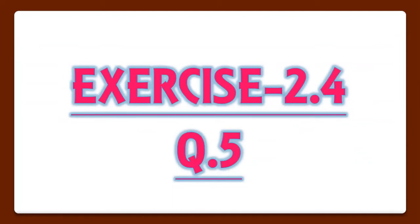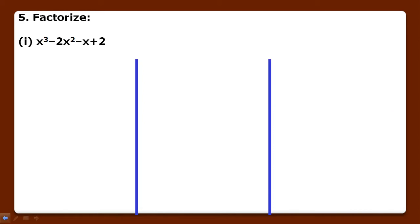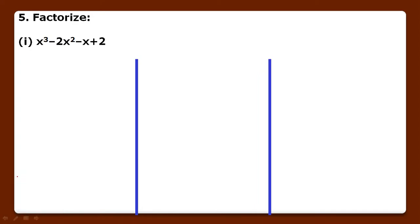Exercise 2.4 question number 5 will be discussed in this part. We will factorize x cube minus 2x square minus x plus 2. In the previous question we studied how to factorize a quadratic polynomial. A quadratic polynomial has two factors, but here we have three factors. The method used is done in three steps.